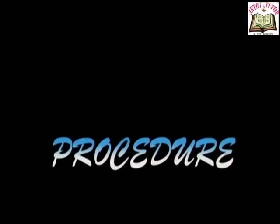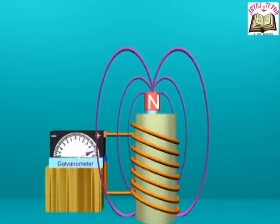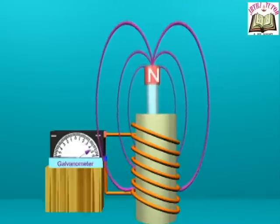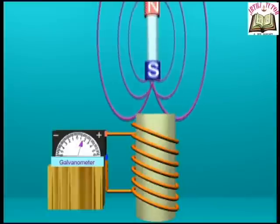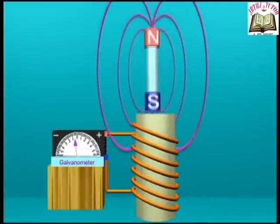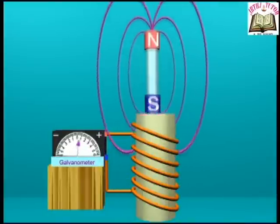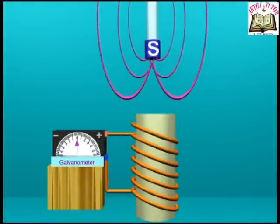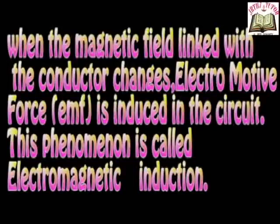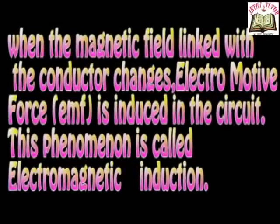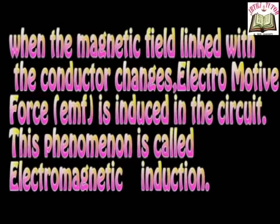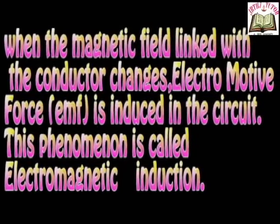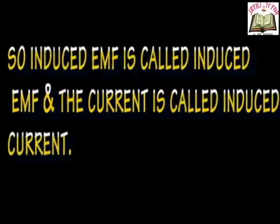Procedure: Push the bar magnet N and S into the cylinder. The deflector of the galvanometer deflects in one direction. When the magnet is pulled back, the deflector deflects in the opposite direction. That is, when there is a relative motion between bar magnet and coil, an EMF is induced in the circuit. Thus, we can define electromagnetic induction as: when a magnetic field linking with the conductor changes, an EMF is produced in the circuit. This phenomenon is called electromagnetic induction. The EMF so produced is called induced EMF and the current which flows is called induced current.